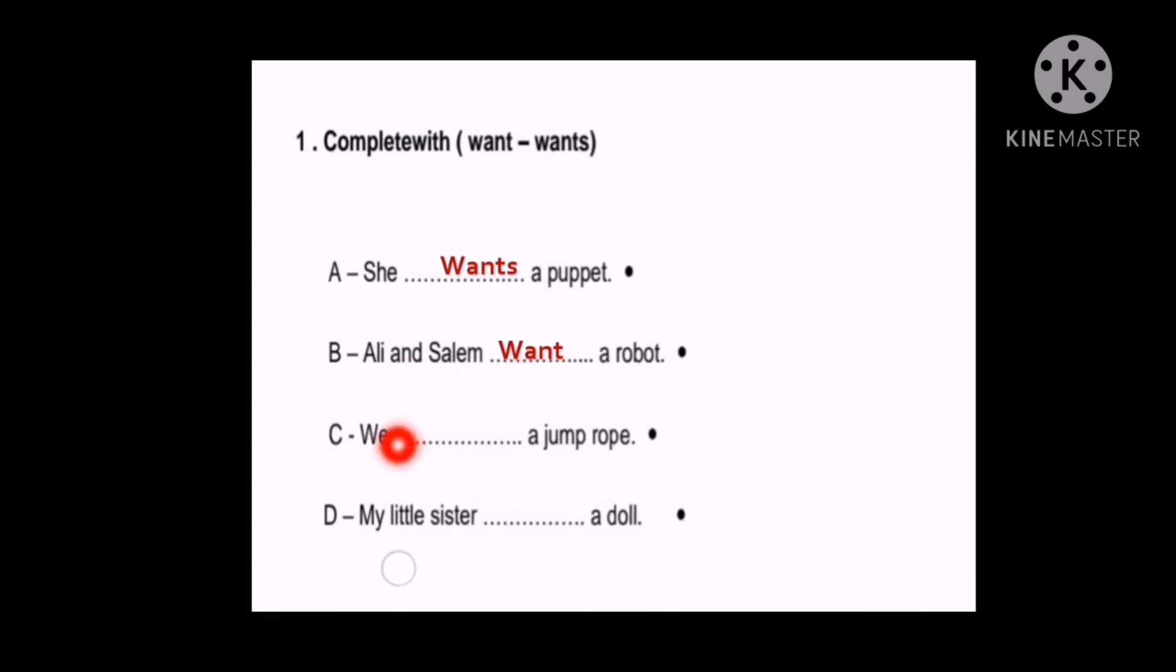C: We. We is a plural pronoun. So we want a jump rope. D: My little sister. My little sister wants because she's one. Because my little sister is a pronoun. What is the pronoun that refers to my little sister? She. And she takes what? She takes wants. She takes the S. Wants a doll. Perfect.